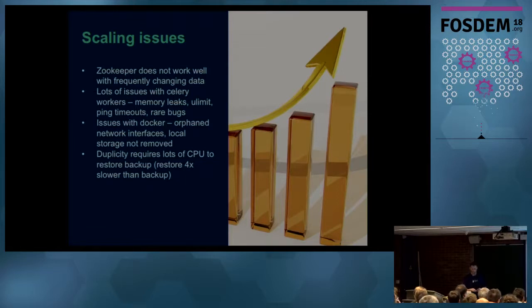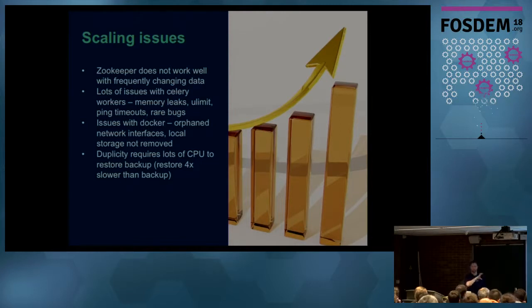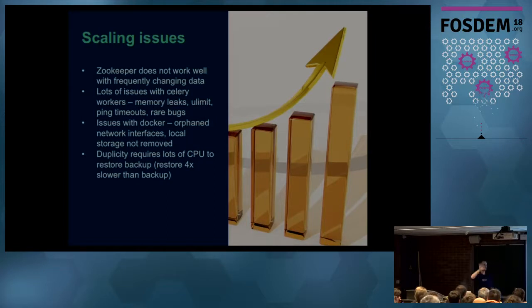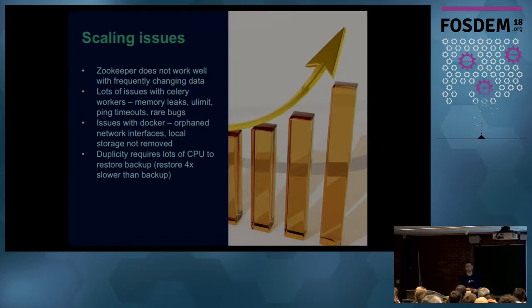We also had problems with Celery workers: memory spikes, and CPU issues when there are connectivity problems. In virtual machines, CPU characteristics aren't flat — sometimes another VM saturates it. Celery requires timely heartbeat pings, and when it doesn't receive them it marks workers as dead. We ended up with half our Celery workers dead at one point. We fixed this by increasing the ping timeout, and it works reasonably well now, but we look forward to a new Celery version.